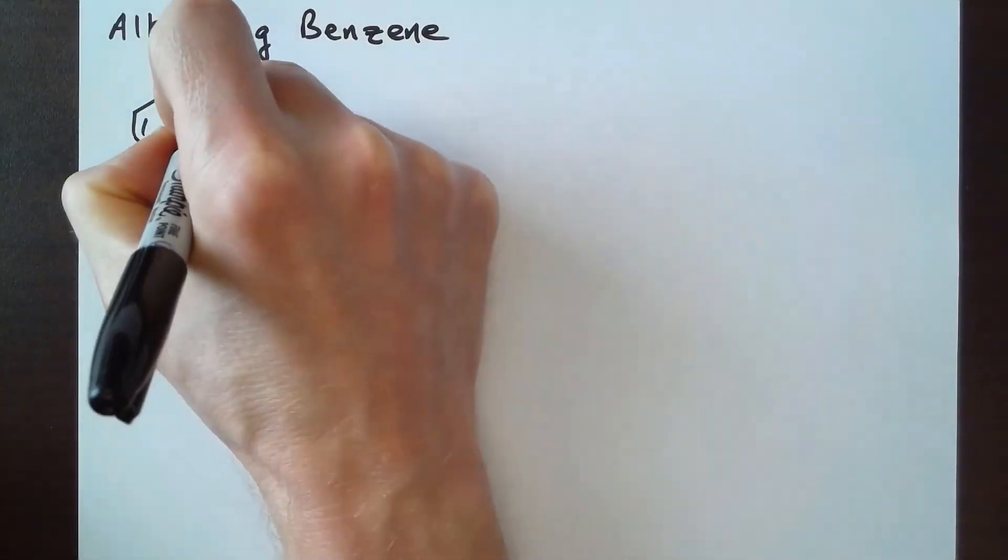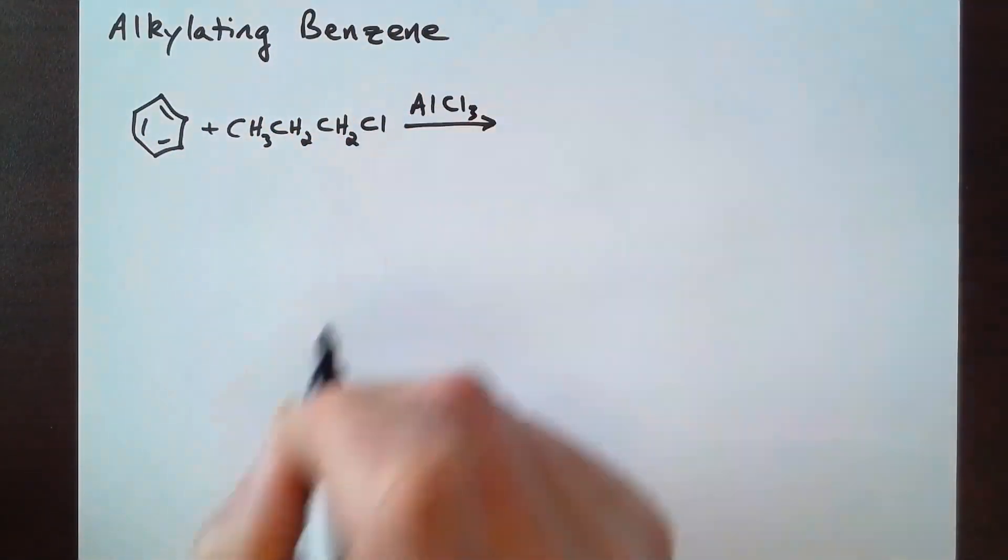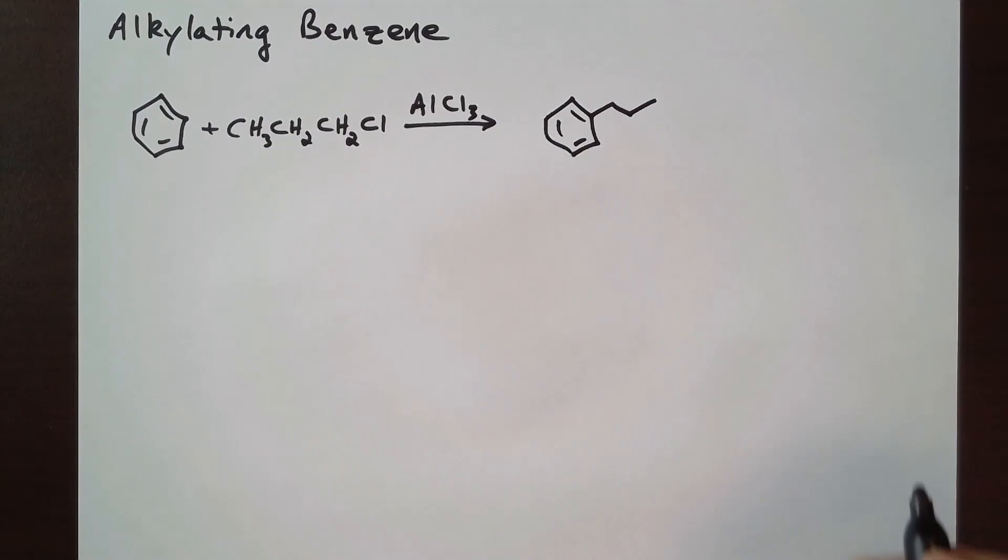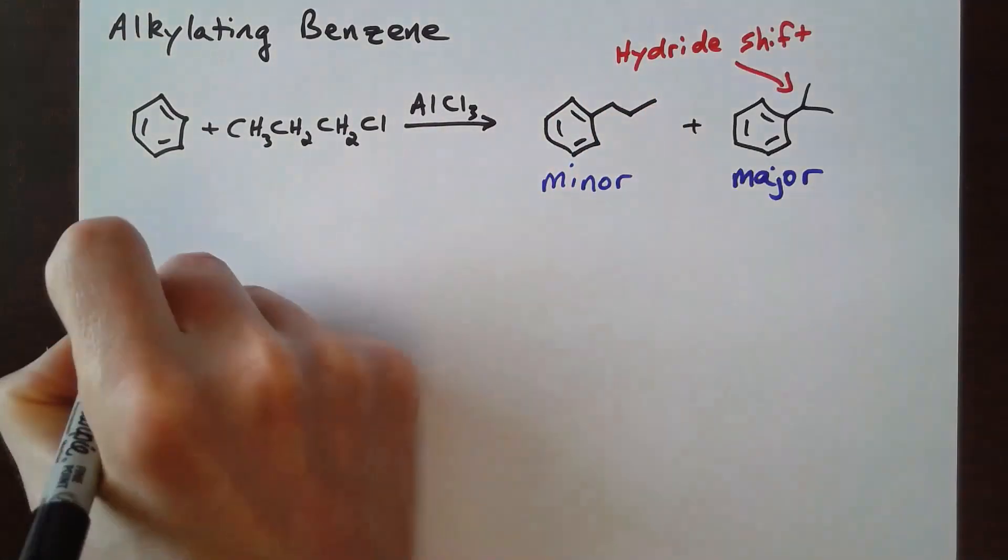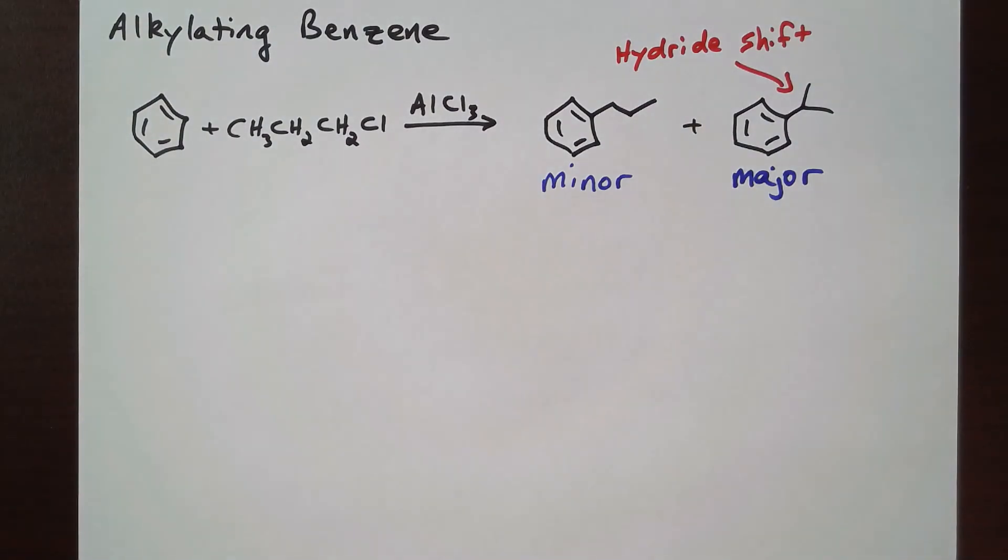Let's take a look at an example of what we have learned about activating and deactivating groups. Suppose that we want to make propylbenzene from benzene. One way to do this is to react benzene with one-chloropropane in the presence of an aluminum chloride catalyst. However, the electrophile in Friedel-Crafts alkylation reaction is a carbocation. The major product will be isopropylbenzene rather than propylbenzene due to a hydride shift.